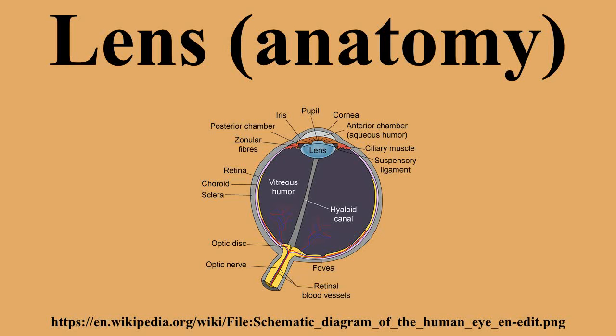The zonular fibers perform this function in mammals. In fish and amphibians, the lens is fixed in shape, and focusing is instead achieved by moving the lens forwards or backwards within the eye. In cartilaginous fish, the zonular fibers are replaced by a membrane, including a small muscle at the underside of the lens. This muscle pulls the lens forward from its relaxed position when focusing on nearby objects. In teleosts, by contrast, a muscle projects from a vascular structure in the floor of the eye, called the falciform process, and serves to pull the lens backwards from the relaxed position to focus on distant objects.